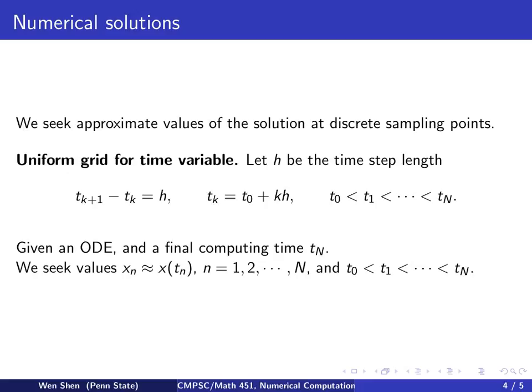Given an ODE and the final computing time tn, what we do will be seeking discrete values xn, which shall approximate the exact solution at the grid point tn. And n goes through all the grid points, from t0 all the way to tn.